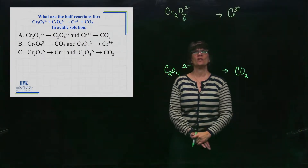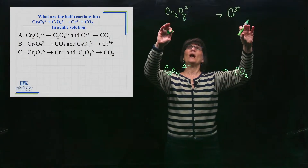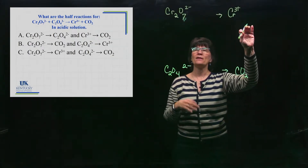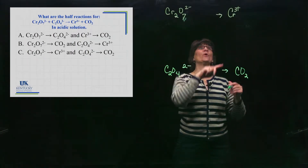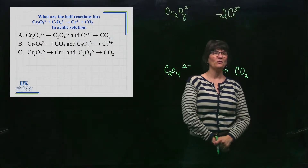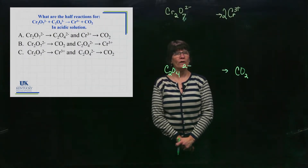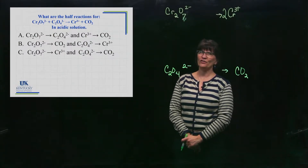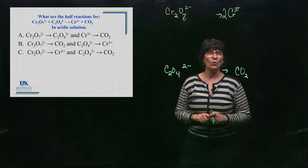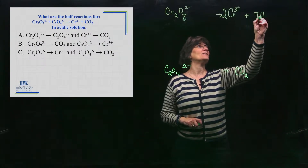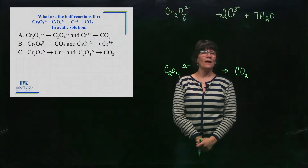Working through the first half-reaction: balance elements that are not oxygen or hydrogen first — that would be chromium. There are two chromiums on the left and only one on the right, so I put a coefficient of two. Now the chromiums are balanced. To balance the oxygen, you add enough water molecules — there are seven oxygens so I need seven waters. Now the oxygens are balanced.